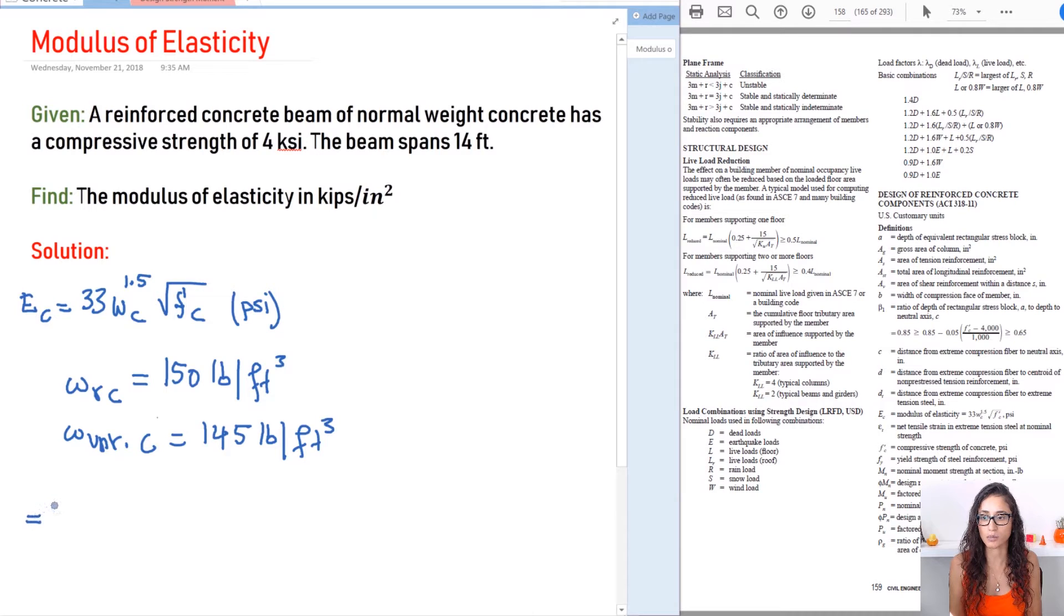So if we plug in all the numbers, I have 33. Then because we have reinforced concrete I'm going to use 150, so I have 150 pounds per cubic feet to the power of 1.5, and then I'm going to multiply it by square root of f prime c. This is where it's a little bit tricky—f prime c has to always be in the unit of pounds per inch squared.